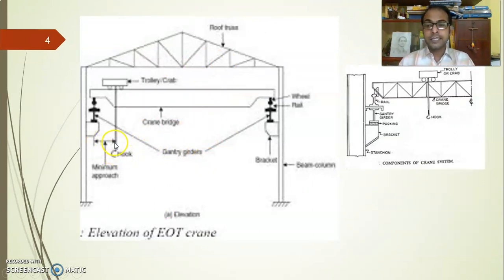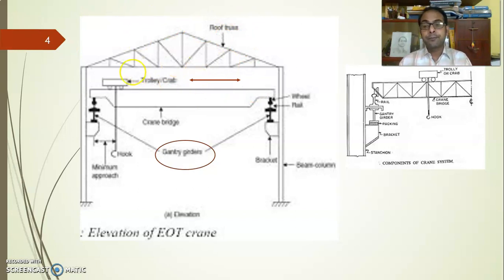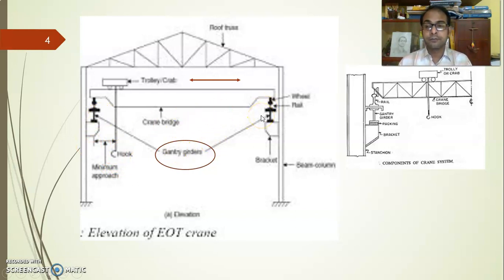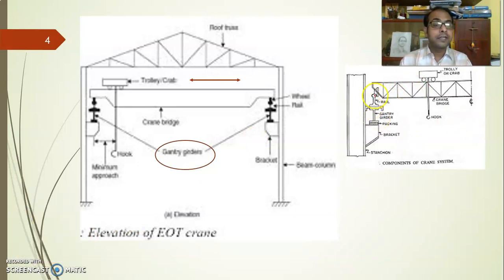In the two-dimensional view, this dimension is very important — it is known as the minimum hook approach distance, or hook approach distance. The crab unit or trolley unit moves in the horizontal direction, but it cannot approach beyond this limit; otherwise the load may hit the column and cause a problem. This is the gantry girder we are going to design, which is provided with a rail supporting the crane girder that is fitted with wheels.